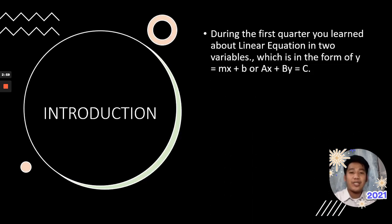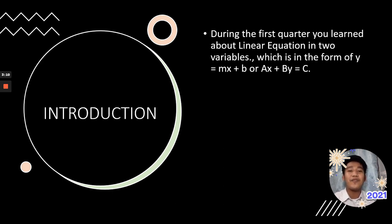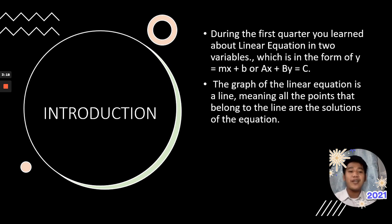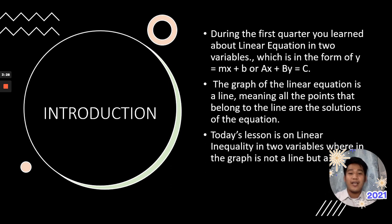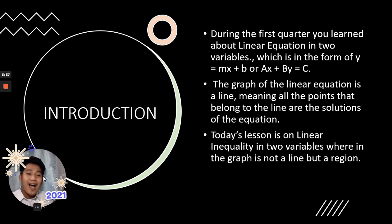For our introduction: during the first quarter, you learned about linear equations in two variables, which is in the form y = mx + b or ax + by = c, the standard form. The graph of a linear equation is a line, meaning all the points that belong to the line are the solutions of the equation. Today's lesson is on linear inequality in two variables, where the graph is not a line but a region.